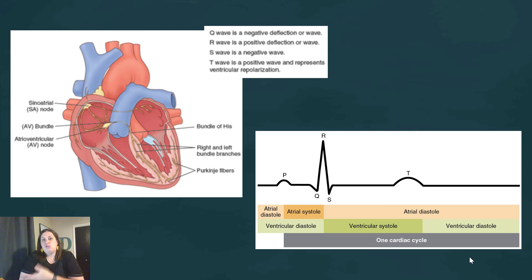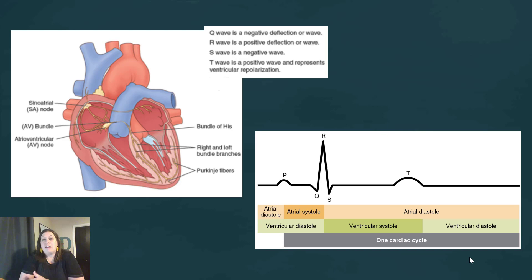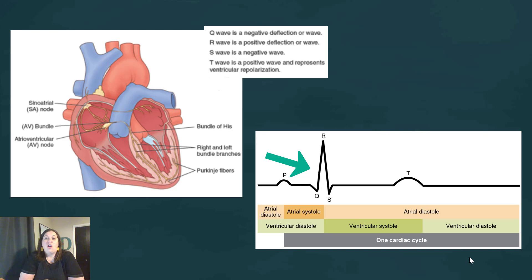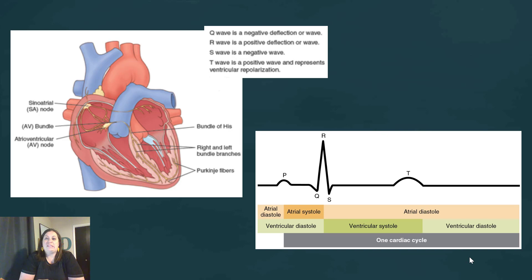This electrical signal can be visualized when we hook someone up to an ECG or EKG — an electrocardiogram — which gives us a series of waves. The P wave is when the atria are getting ready to contract; they contract from the P wave to the Q. At the Q wave the atria start to relax. The QRS complex is when the ventricles contract. The T wave allows the ventricles to relax, and the whole heart is relaxed before the next P wave begins, allowing the atria to contract again.